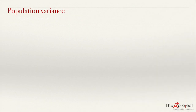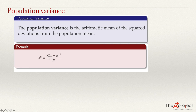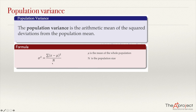We can now define the population variance. The population variance is the arithmetic mean — the average — of the squared deviations from the population mean. The formula uses the Greek letter sigma squared (σ²) as the symbol for variance. It equals the sum of (x minus mu) squared, divided by N, where mu is the population mean and N is the population size.